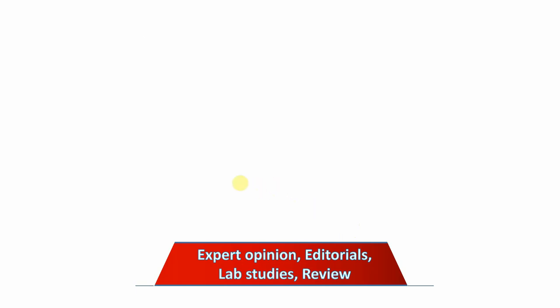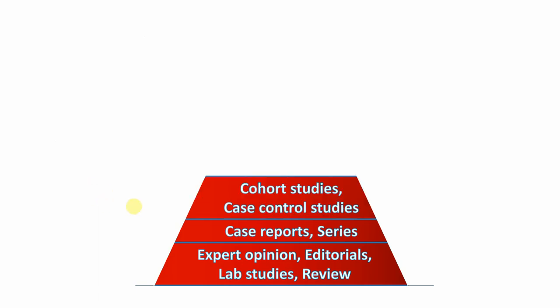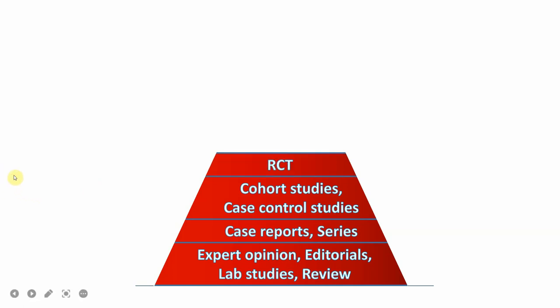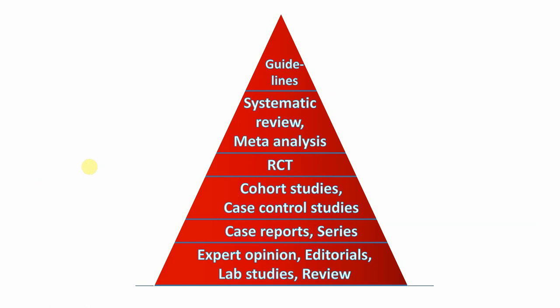Today's focus is the randomized control trial. In the evidence hierarchy pyramid, at the bottom are expert opinions, editorials, lab studies, and review articles. Above these are case reports, case series, and observational studies including cohort and case-control studies. Above these are randomized control trials. However, RCTs are not at the highest peak — when multiple RCTs are reviewed systematically, this is called a systematic review and meta-analysis. When all of these are applied to clinical practice through guidelines and synopses, that represents the highest hierarchy of medical evidence.